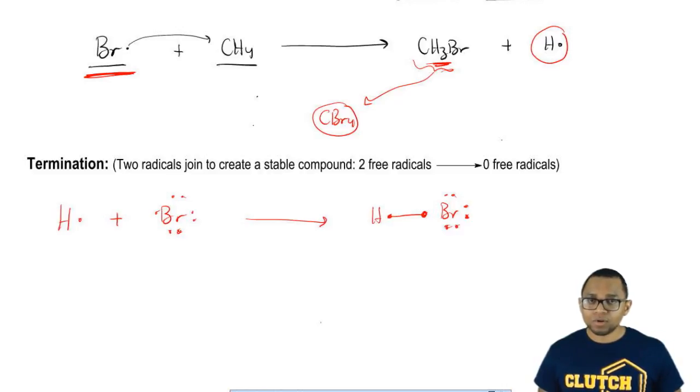In initiation, we form two radicals. In propagation, we form a radical and a new compound. In termination, we get rid of all our radicals to create one new stable compound.